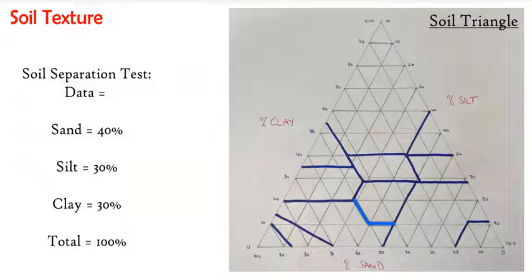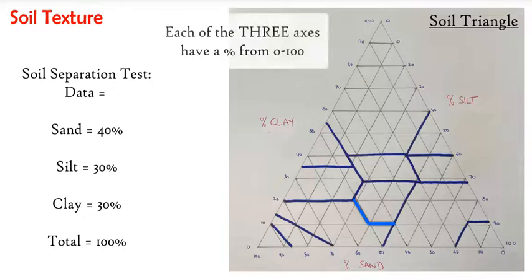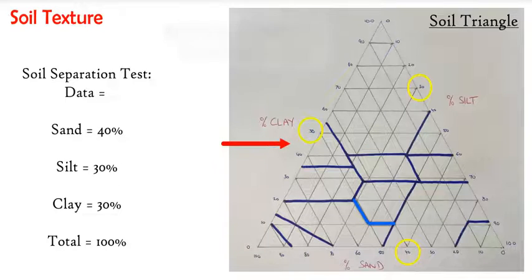From the soil separation lab, let's say we have 40% sand, 30% silt, and 30% clay—a very even ratio between the three components. How do we use this triangle? This direction is clay, this direction is silt, and this direction is sand.